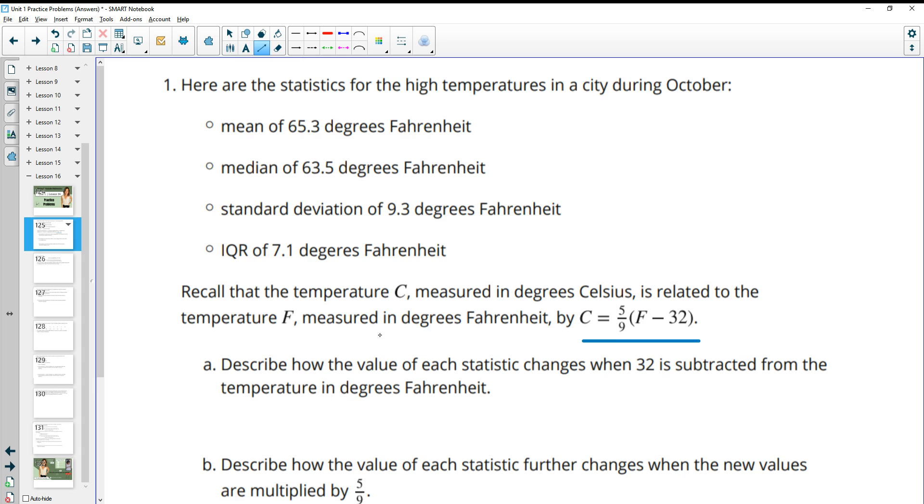In this first part A, it says describe how the value of each statistic changes when we subtract 32 from each of the original Fahrenheit temperatures. So when we subtract a value or add a value to everything, we know that that impacts the mean and median the same. So the mean and median are going to go down 32 in this case, since we're subtracting 32 from each data point.